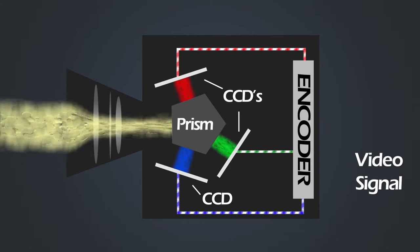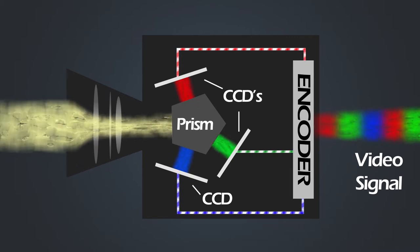Now the job of this encoder is to combine the three of these together into what we call a video signal containing red, green and blue colour information.